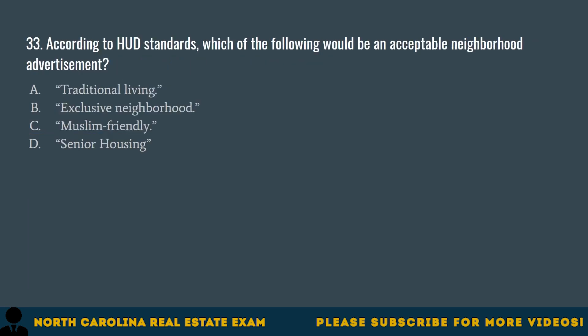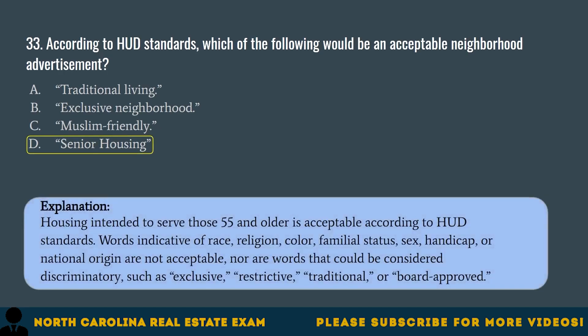Question 33. According to HUD standards, which of the following would be an acceptable neighborhood advertisement? A. Traditional living. B. Exclusive neighborhood. C. Muslim-friendly. D. Senior housing. The correct answer is D. Senior housing. Housing intended to serve those 55 and older is acceptable according to HUD standards. Words indicative of race, religion, color, familial status, sex, handicap, or national origin are not acceptable. Nor are words that would be considered discriminatory such as exclusive, restrictive, traditional, or board-approved.